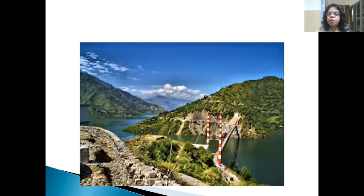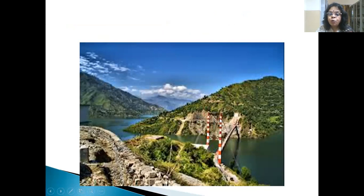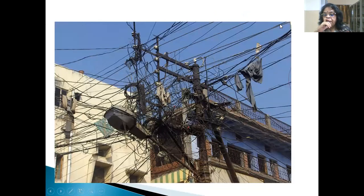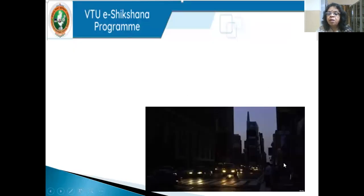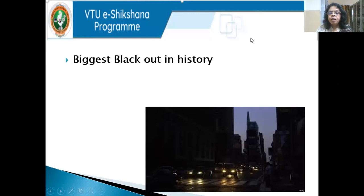There are many challenges: how do you transmit power from areas with good hydel potential through mountainous regions? Evacuating power through mountainous terrain is a very big challenge. How do you ensure reliability, protection, fault finding, and prevention of major faults on the distribution side? This is an actual photograph from one of the biggest blackouts in history — a scene of total darkness with absolutely no power.